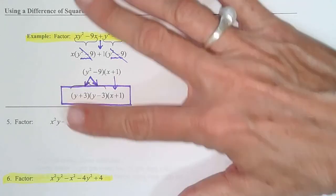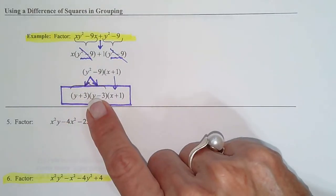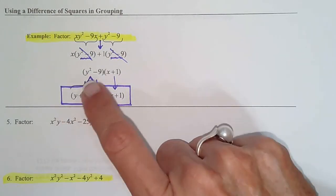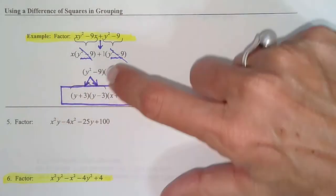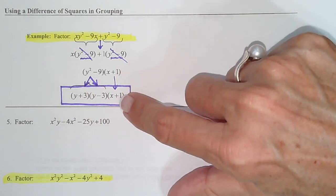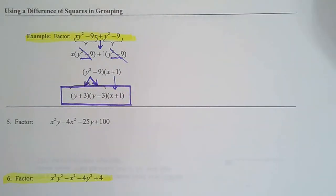It's a difference of squares. So we do 1 plus, 1 minus, square root of y squared is y and y, square root of 9 is 3 and 3, and then the polynomial that doesn't factor just comes down as part of the answer.